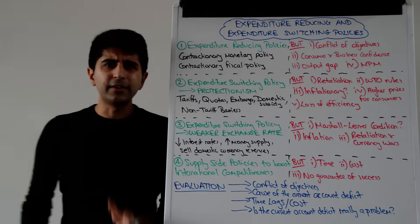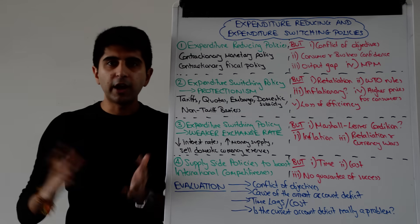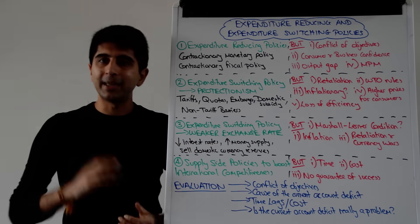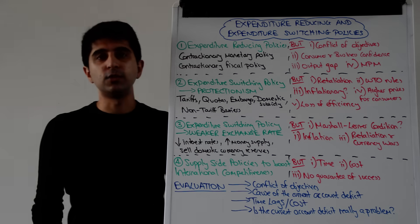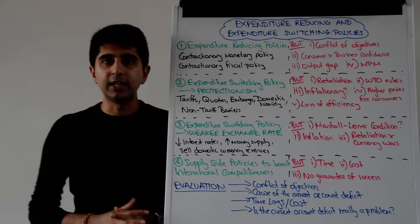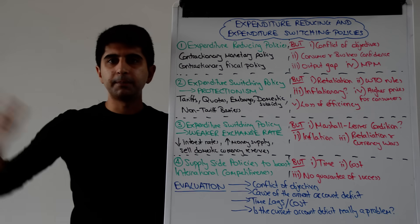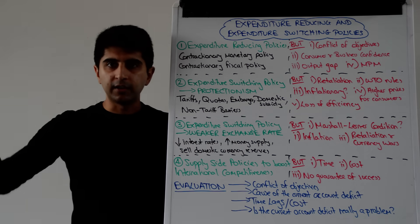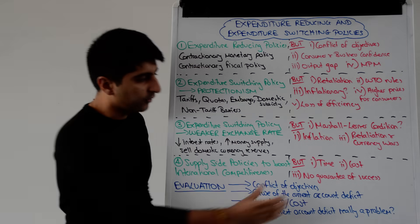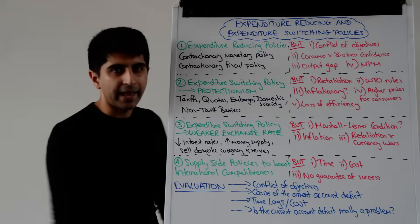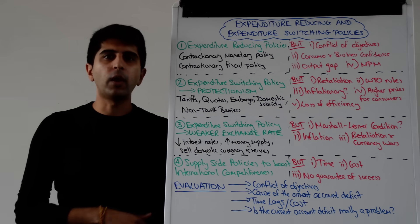For supply-side policies to work, they need to be heavily targeted. For example, if an economy has large productivity issues which are increasing costs of production and making exports less competitive, then supply-side policies to improve productivity need to be used. If it's an investment issue causing poor competitiveness and higher-priced exports compared to rivals, then supply-side policies to boost investment need to be used. Are supply-side policies targeted at the real cause of why there is a current account deficit?